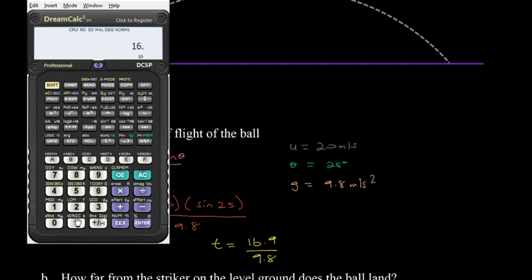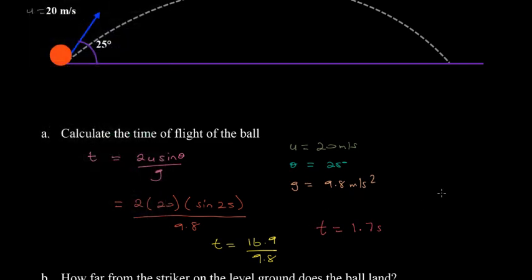From the calculator, we get a value that t, which is the time of flight, is equal to 1.7 seconds. So this is our time of flight: 1.7 seconds.